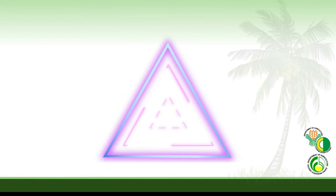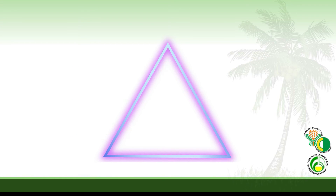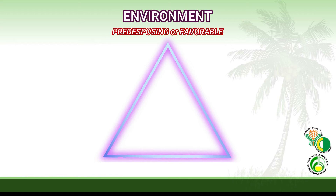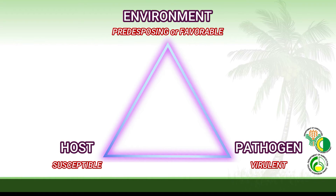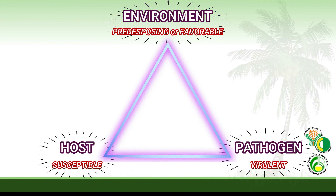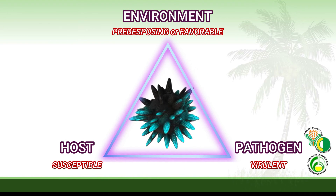The Disease Triangle: For disease development, there are three factors to be considered. If the three focal points of the triangle — the factors for disease development — are all present, the disease will surely occur.